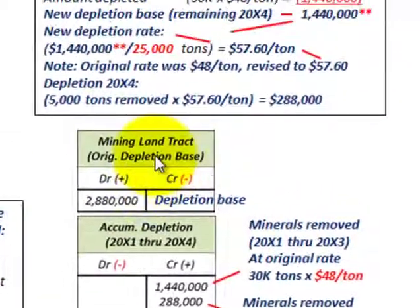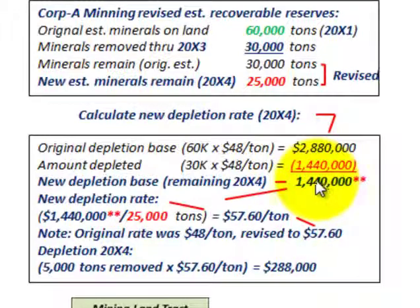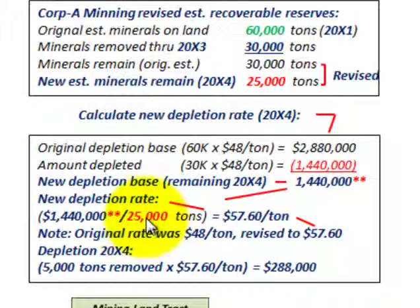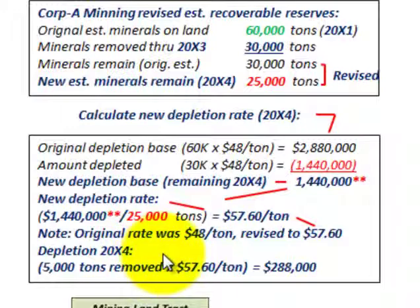That's all you do when making revised estimates. You figure out what's remaining in your depletion base, make any corrections needed, and divide that remaining amount by the new estimated units available. In this case, the revised estimate of minerals remaining on the land gives you the new depletion rate to apply for any future period of mining that land. Any further removal of minerals must use this revised rate.